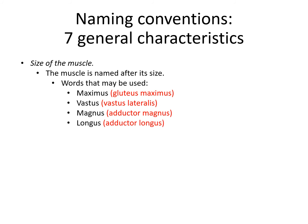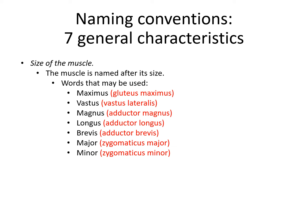Another muscle in the same adductor group is long rather than big, so it's called the adductor longus. Yet another muscle in the group is neither long nor big but short, so it's called the adductor brevis. These three muscles all work together to bring the legs back towards midline — and this is another case where more than one naming convention is used: they're named after both their size and their action. Major and minor are another paired set of terms for the larger and smaller of muscles with similar origin and insertion points, such as the zygomaticus major and zygomaticus minor.